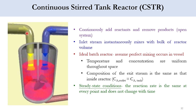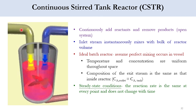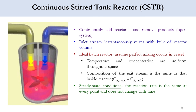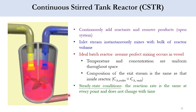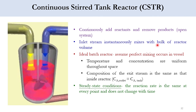In the batch reactor, feed was introduced at one point, the mixture was allowed to proceed for a reaction, and finally the mixture was taken out. But here in the CSTR the feed is continuous — this agitation is for well mixing and the product is getting out. So the feed is continuous, the product is continuous, and reactants are continuously added and products removed. It's an open system, and the inlet stream continuously mixes with the bulk of the reactor volume.